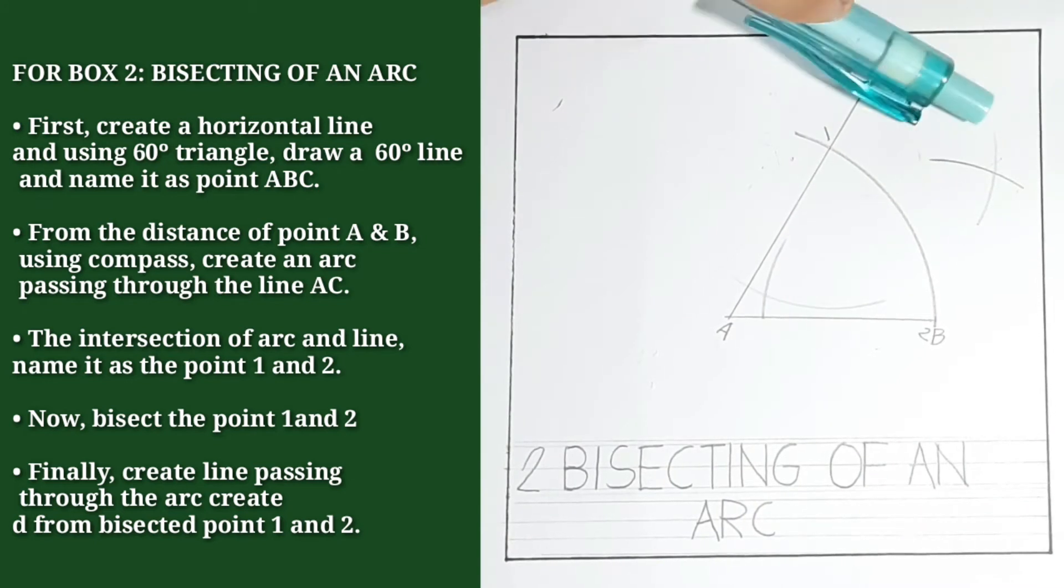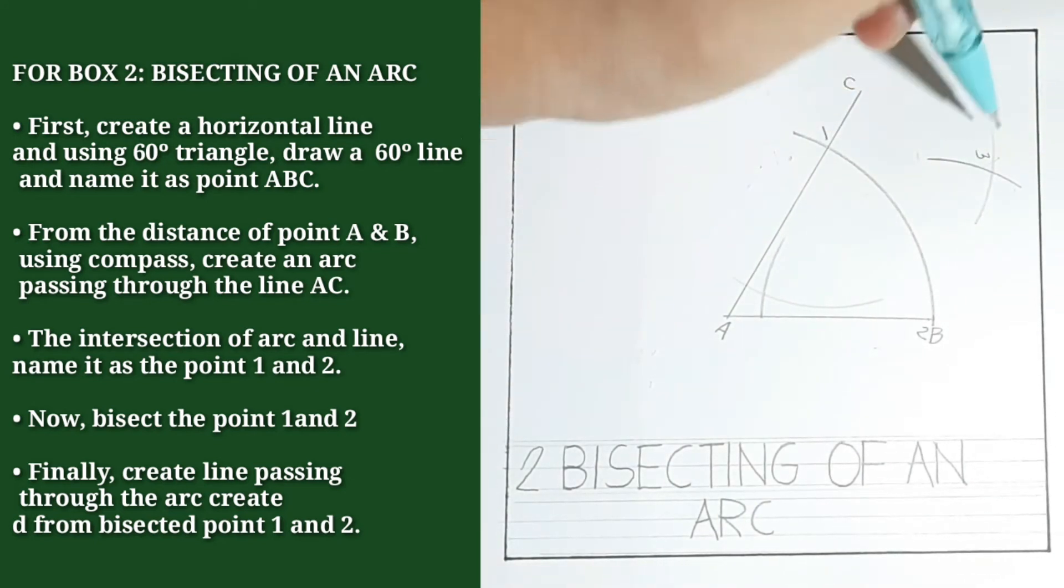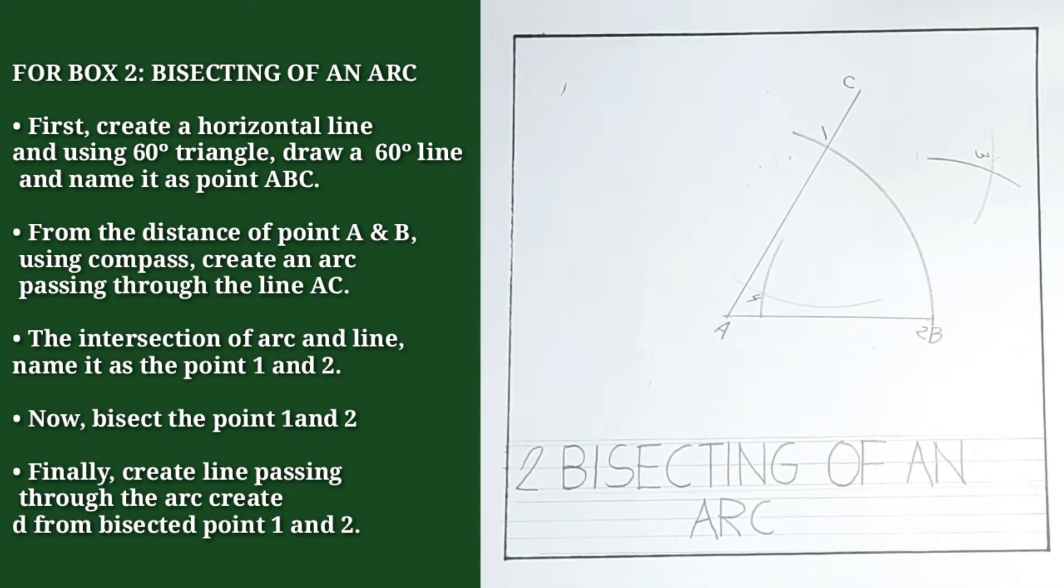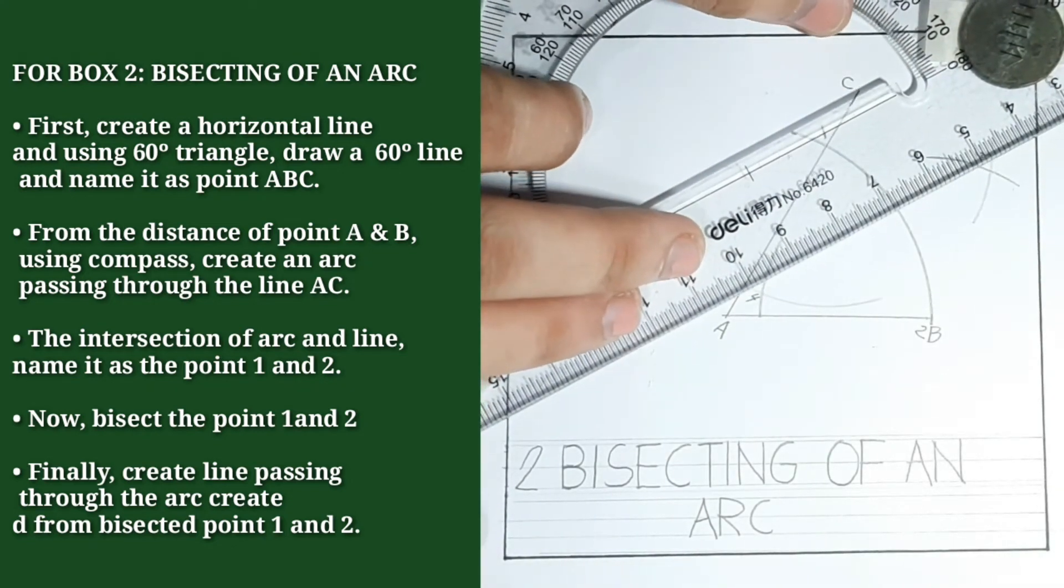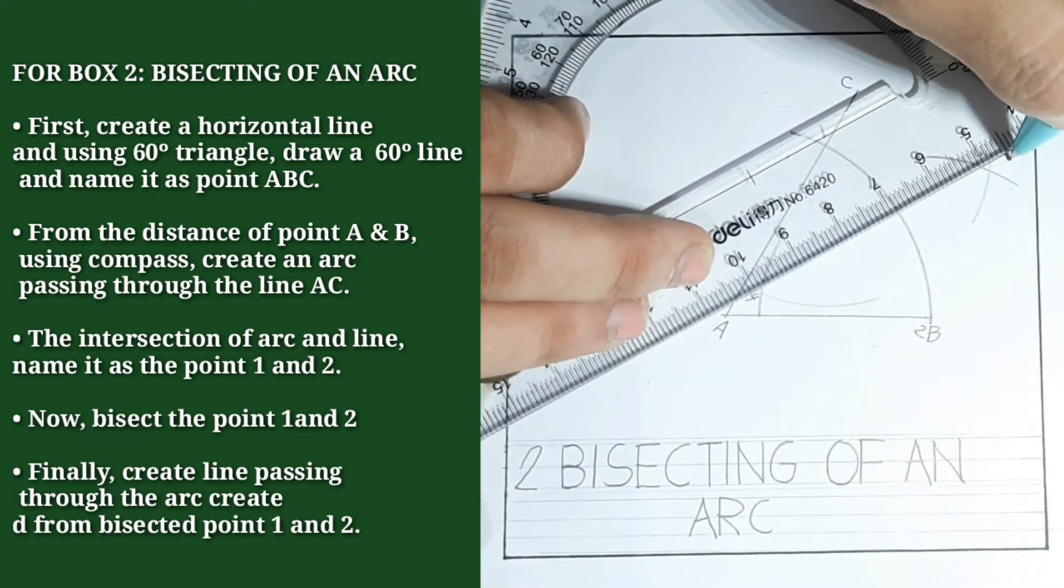Then, on the intersected strike arcs, we will name it by point 3 and point 4. And we will create a line from that intersected arcs.